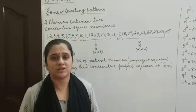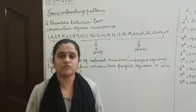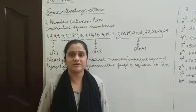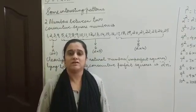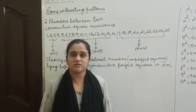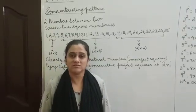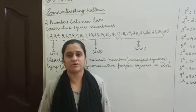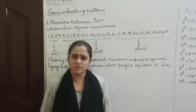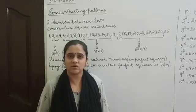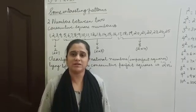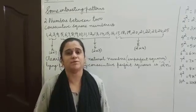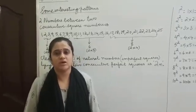In this video, we shall understand how to find the number of imperfect squares lying between two consecutive perfect square numbers. So before that, let's recall what we mean by perfect squares and imperfect squares.